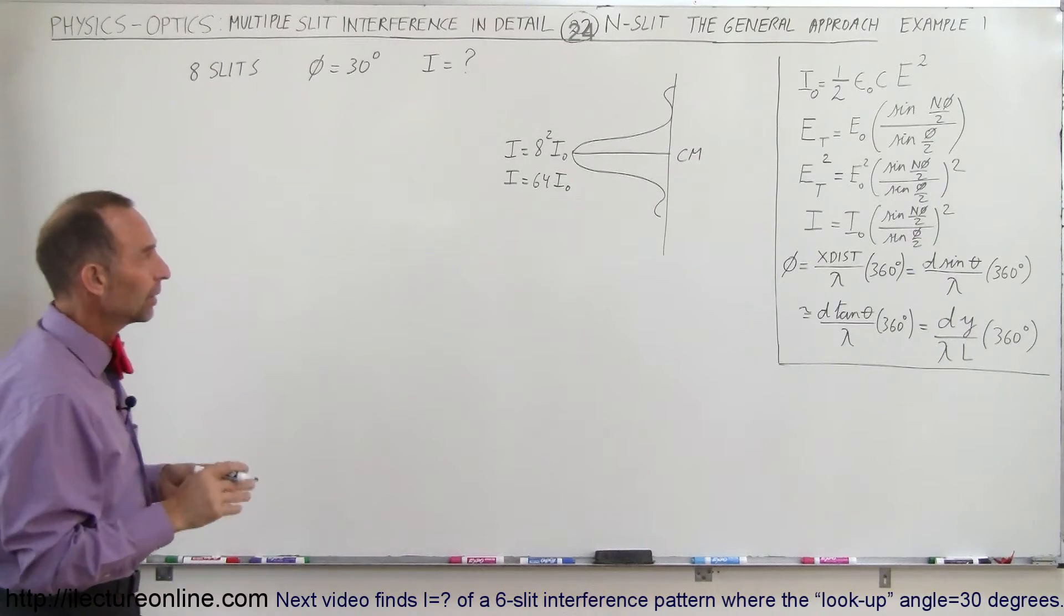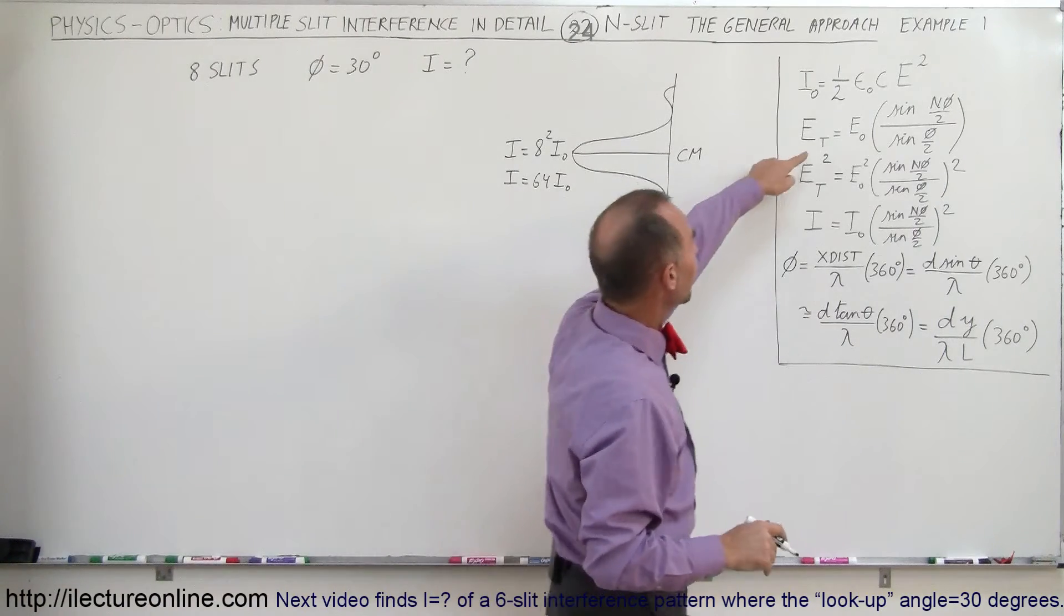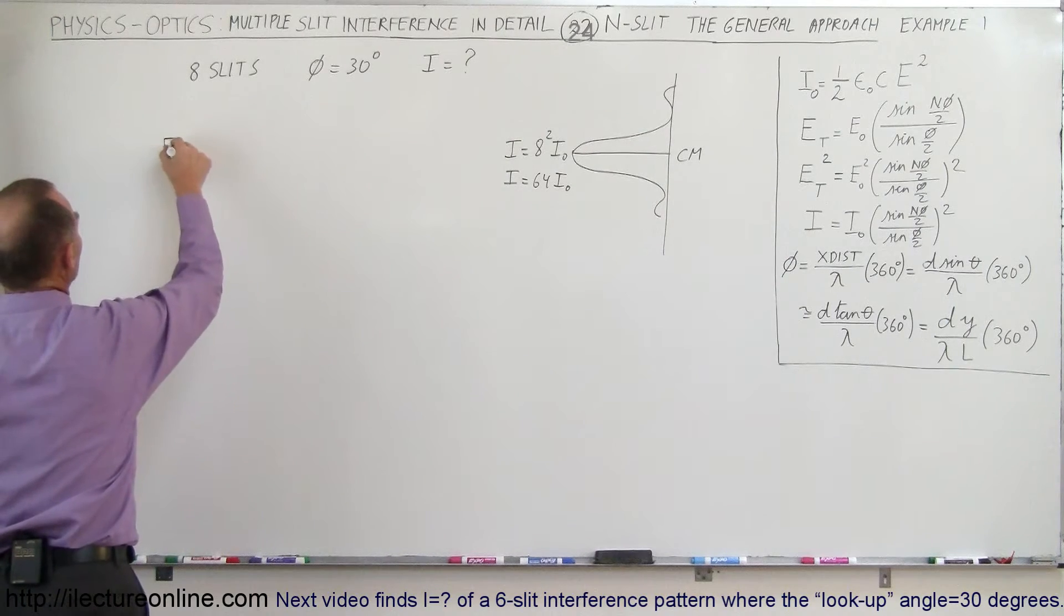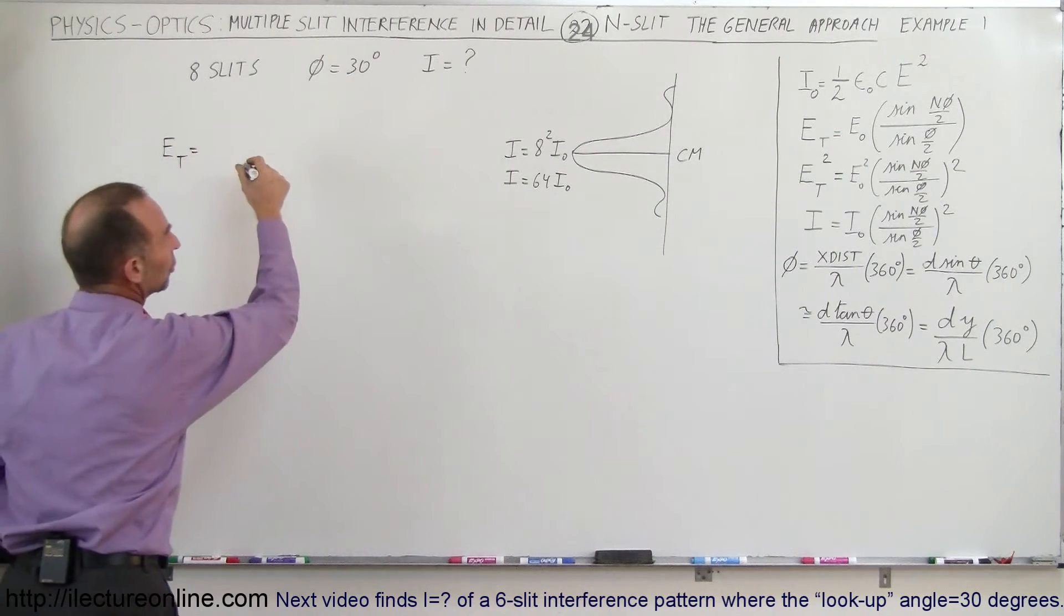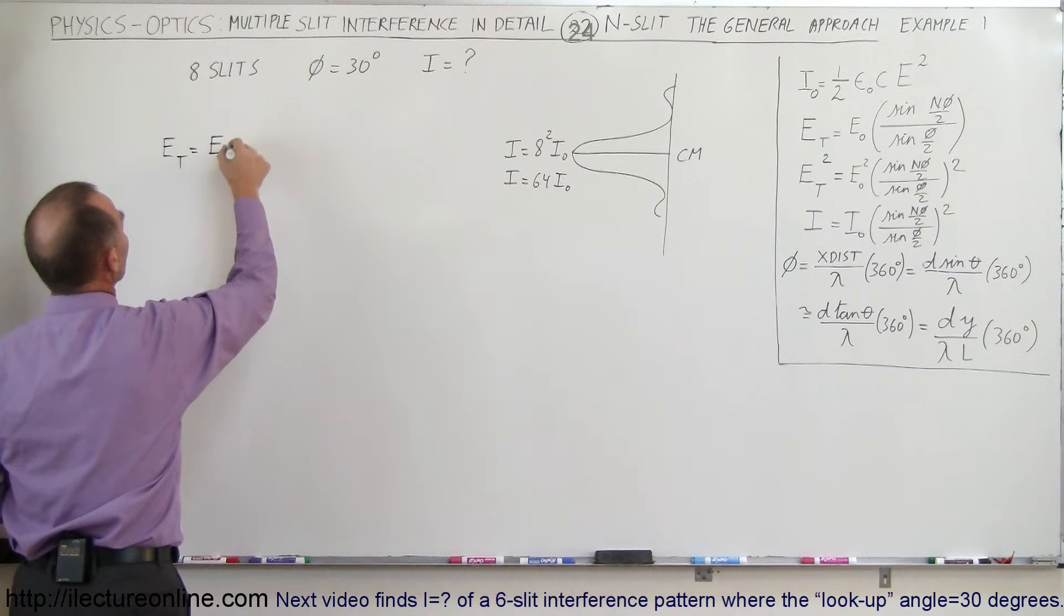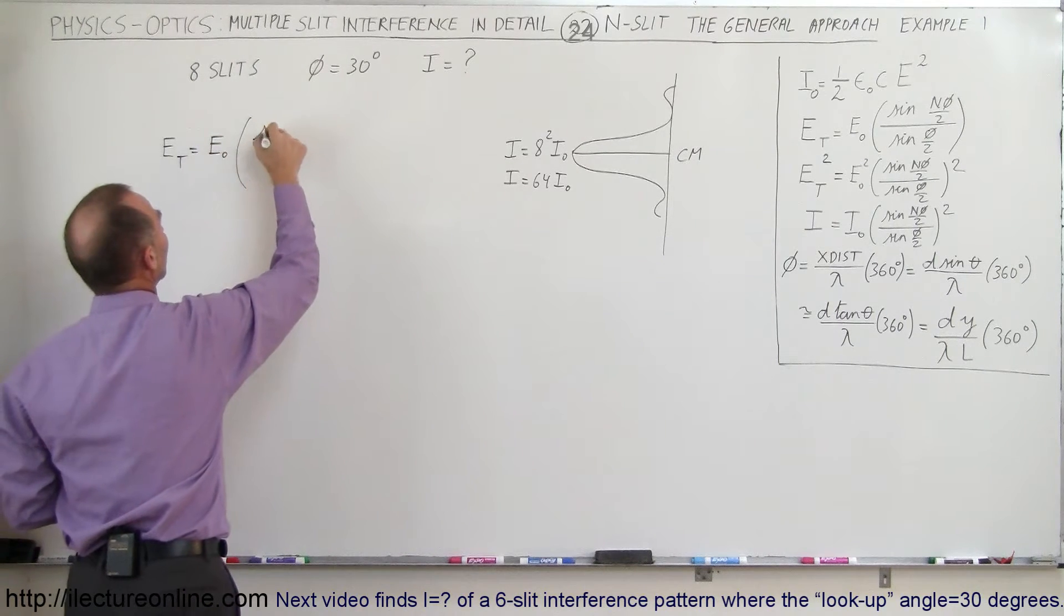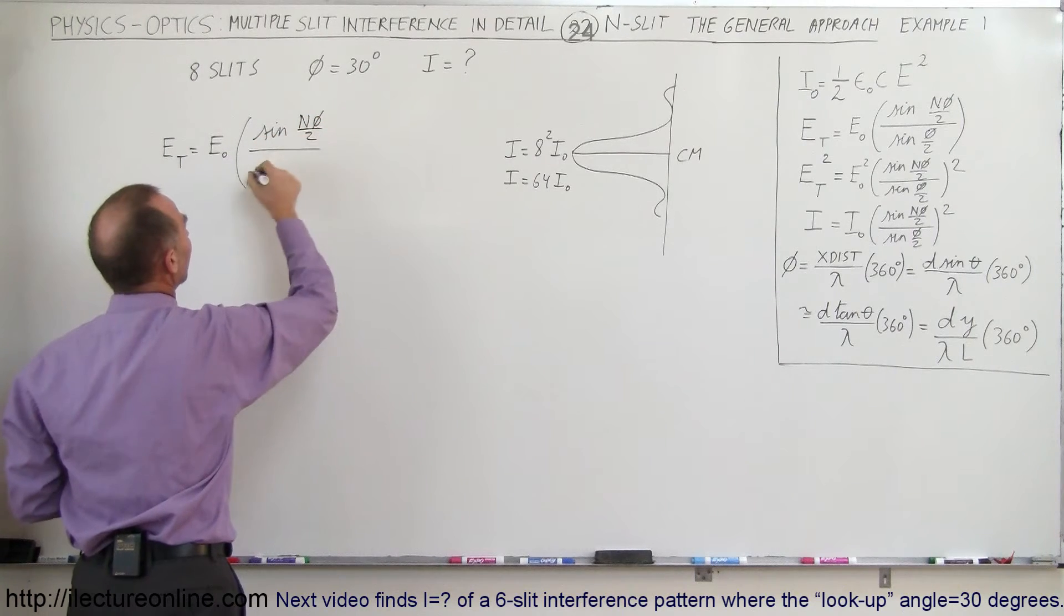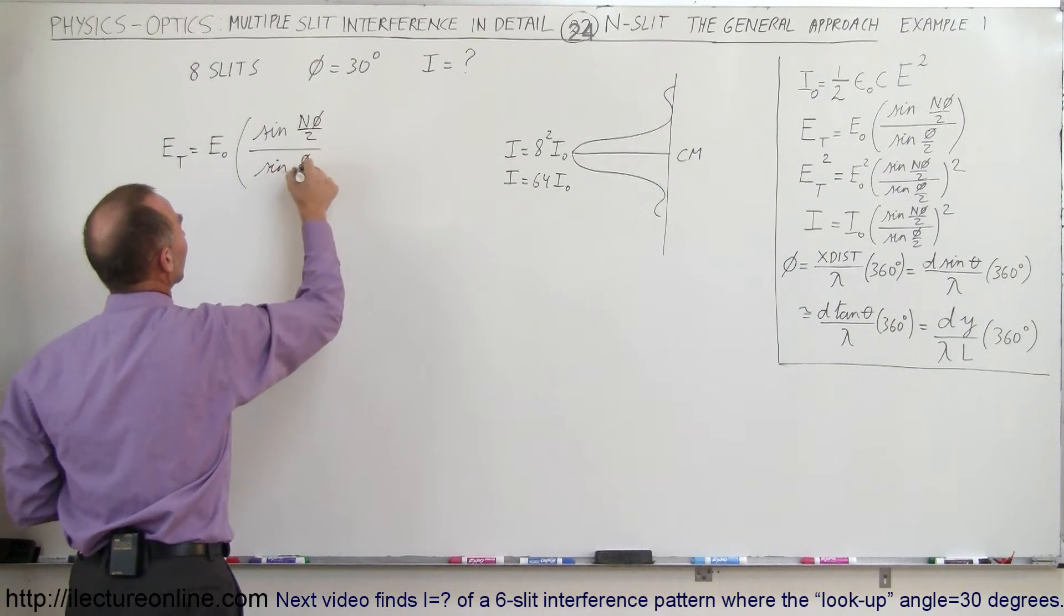How do we do that? Well here we can see that we can find e-total by using this equation right there. So e-total is equal to e sub-naught times the ratio of the sine of the number of slits times the phase angle divided by 2 divided by the sine of the phase angle divided by 2.